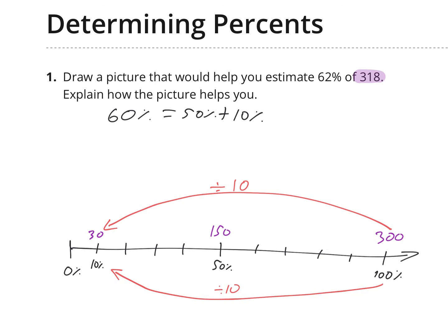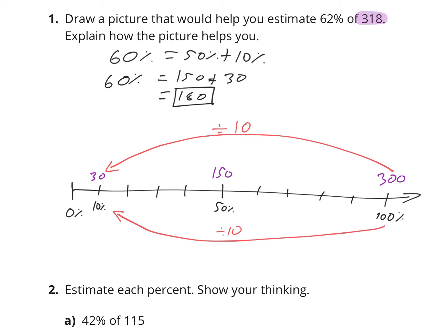So this equation, 60% has become 50%, which is 150, plus 10%, which is 30. So that is 180. And that is the final answer. I can explain how the picture helps me by saying the number line shows that with every 10% increase, the amount increases by about 30.